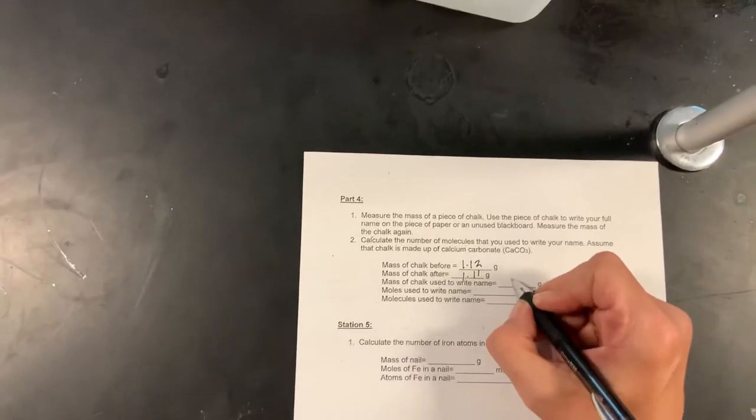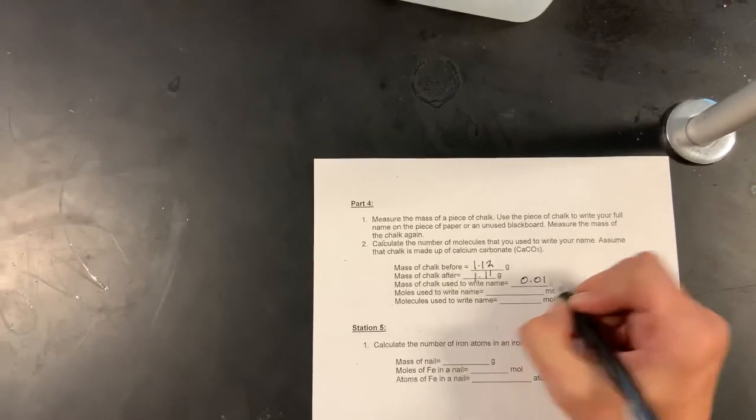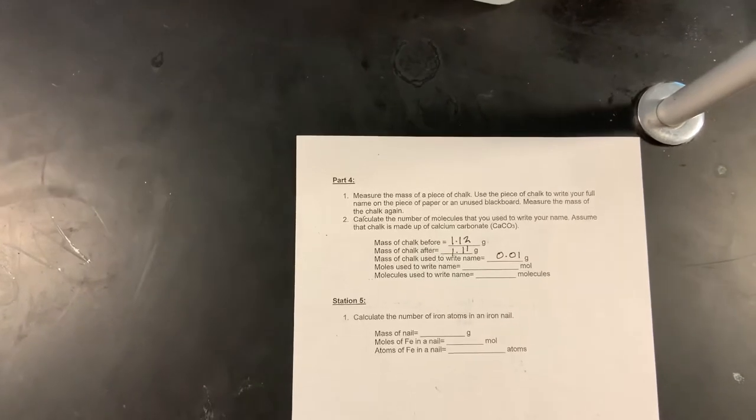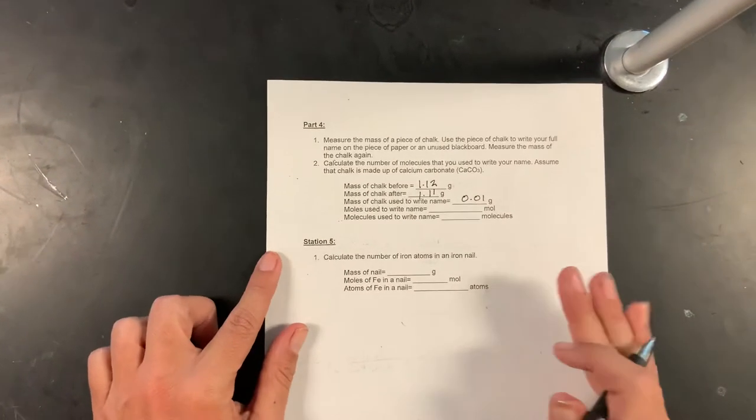We now have 1.11 grams of chalk, so the mass of chalk used to write my fabulous bougie name is 0.01 grams.